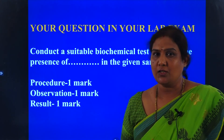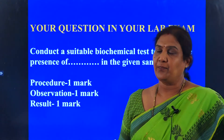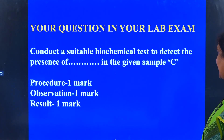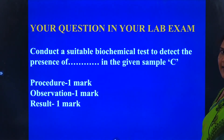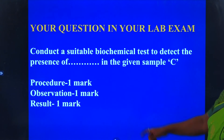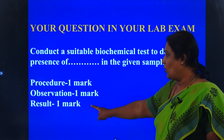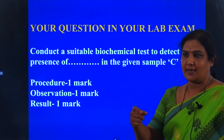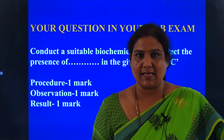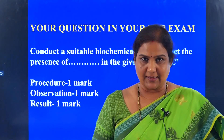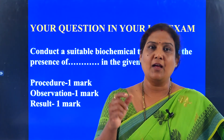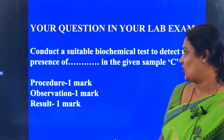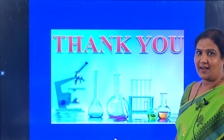Children, this is what you have done for your practical classes. In your lab exam, the question will be: conduct a suitable biochemical test to detect the presence of dash in the given sample. One of the samples will be placed. You need to write the procedure, observation, and result — each carrying one mark. Whatever you conduct should be reported to the examiner, written in your answer script. After conducting the experiment, show it to the examiner and get a signature, which will fetch you 3 marks. So easy!